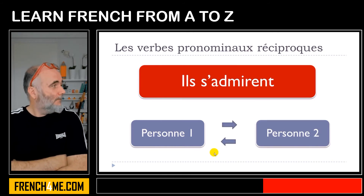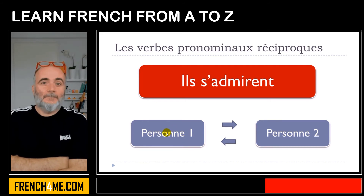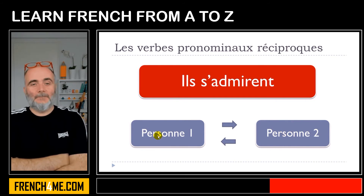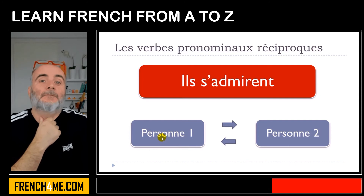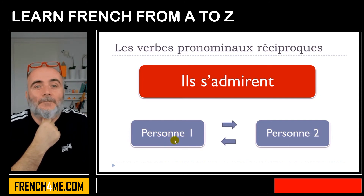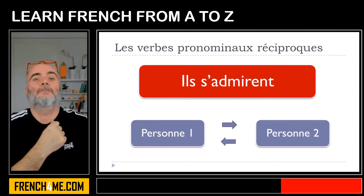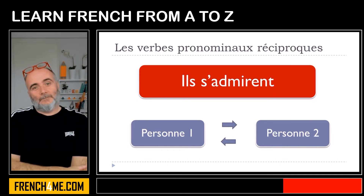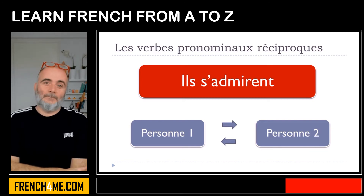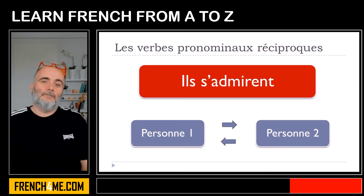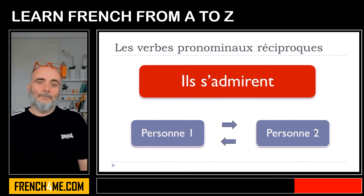But the same sentence can mean the opposite: person number one admires person number two, and person number two admires person number one — they admire each other — making it a verbe pronominal réciproque. It is tricky, but normally you have context, and you tend to understand quite quickly whether it's réfléchi or réciproque.